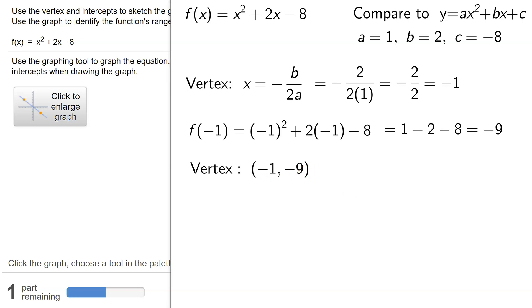I also need to find one of the intercepts. The problem doesn't specify which, so I'm going to find the y-intercept, which is a lot easier to find than the x-intercepts. We find the y-intercept by setting x equal to 0, which means I plug a 0 in for x in the equation. I get f(0) = 0² + 2(0) - 8, which is just -8. So my y-intercept is (0, -8).